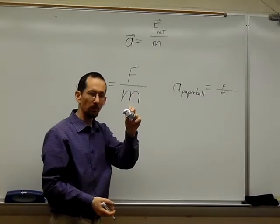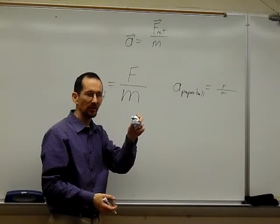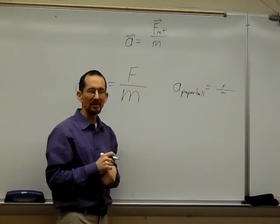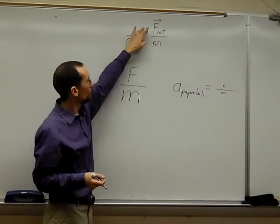The paper ball has a smaller force and a smaller mass. And so they fall at the same rate because they have the same ratio of force to mass.